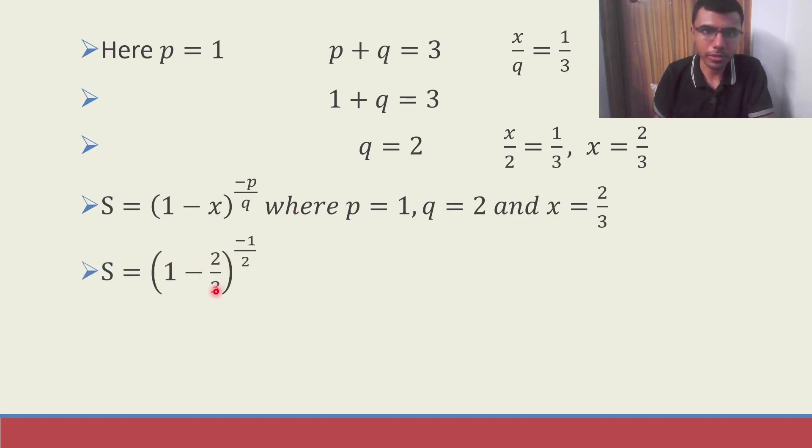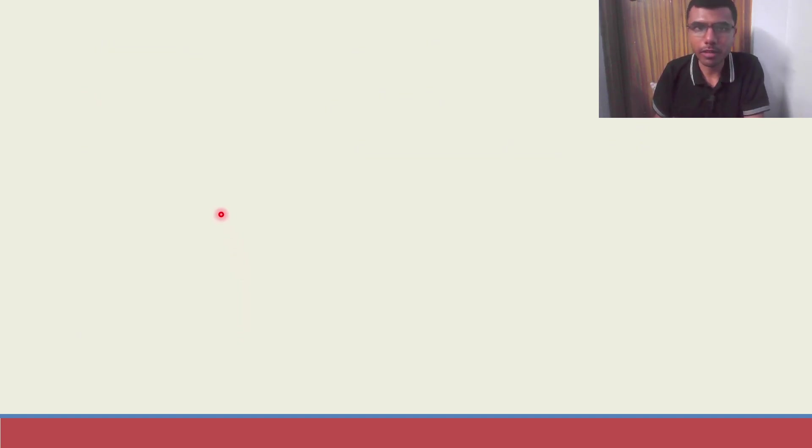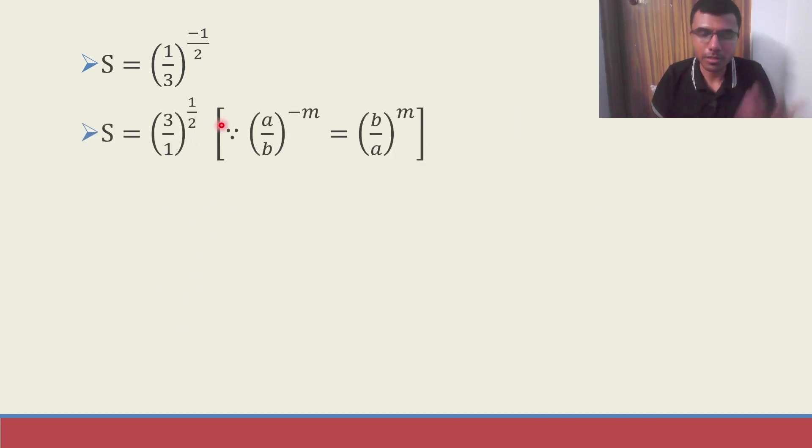Now next I just substituted the things. So just take LCM 3 minus 2 by 3 whole power minus 1 by 2 and 1 by 3 whole power minus 1 by 2. A power minus m is nothing but or you could use the other formula A by B whole power minus m is nothing but B by A whole power m. So 1 by 3 whole power minus 1 by 2 is nothing but 3 by 1 whole power 1 by 2.